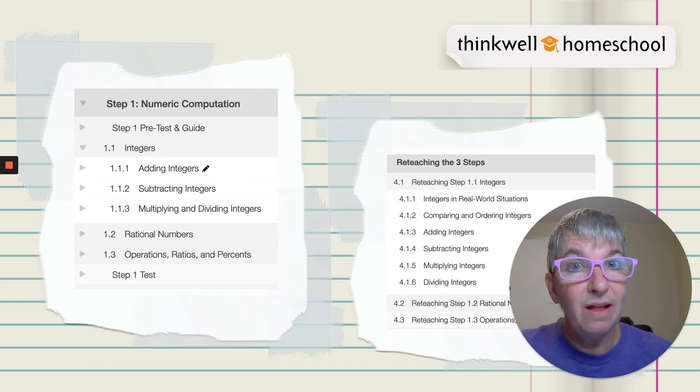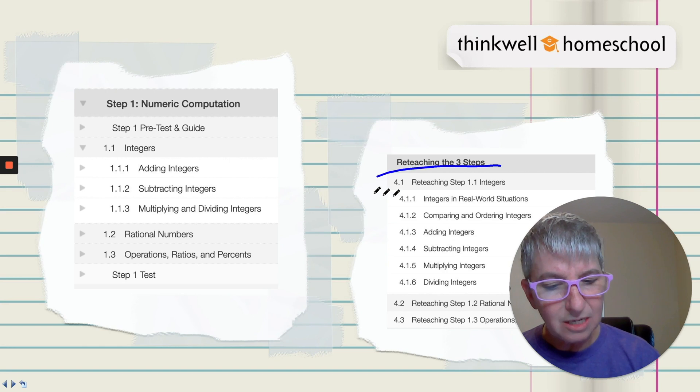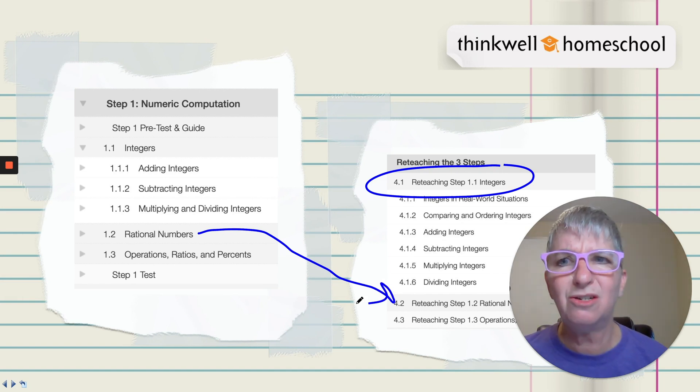We also have another lifeline for you. So if you're struggling in a section and you're like, oh, my gosh, I need some more help, then you can do the reteaching. Step four. Sometimes we need an extra step. So if you need help with rational numbers a little more, we've got reteaching for rational numbers.